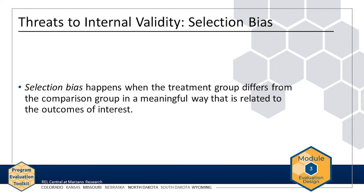Selection bias happens when the treatment group differs from the comparison group in a meaningful way that is related to the outcomes of interest.